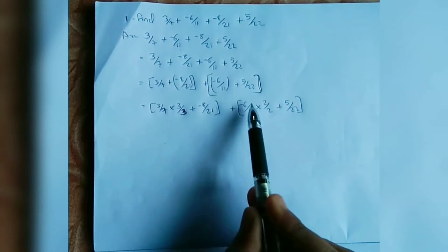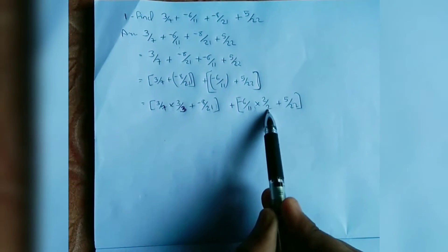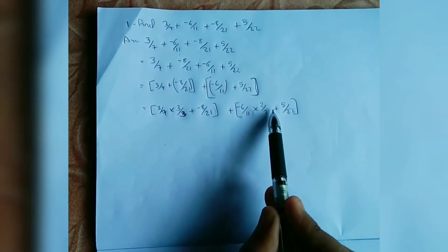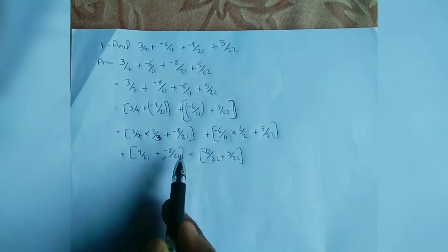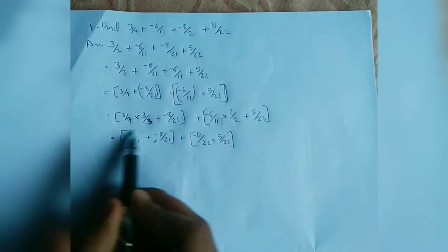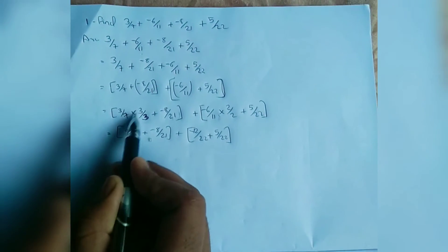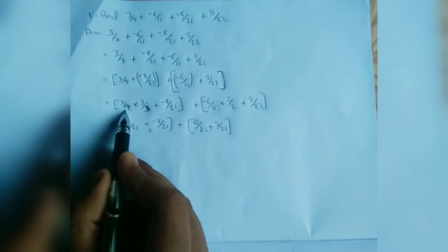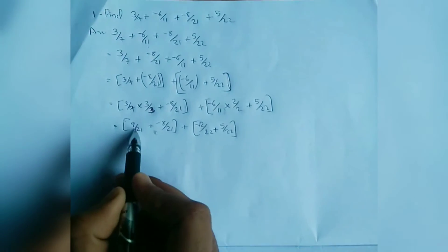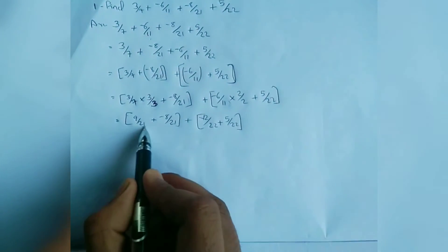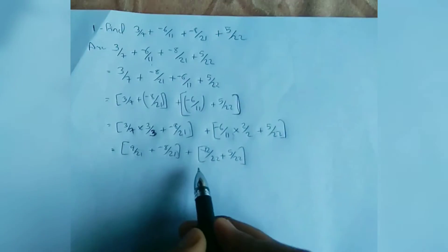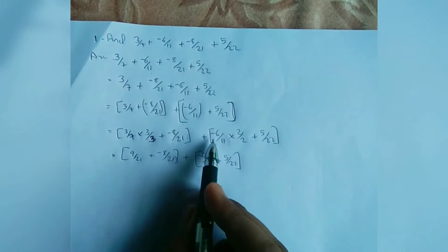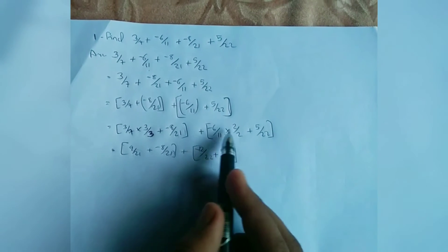2 times (−6/11): the denominator becomes 22. So (−6/11) × (2/2) gives (−12/22), plus 5/22. Equal to 9/21 + (−8/21), and on the other side (−12/22) + 5/22. The common denominators are 21 and 22.